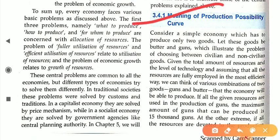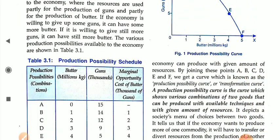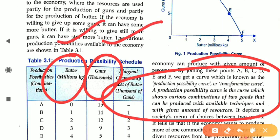The meaning of PPC: a Production Possibility Curve is a curve which shows various combinations of two goods which can be produced with available technique and a given amount of resources. In our case, the two goods are butter and guns. The PPC shows different combinations of these two goods — different quantities of butter and different quantities of guns.